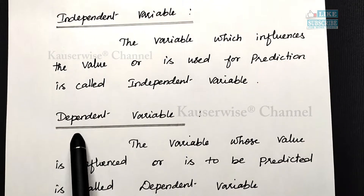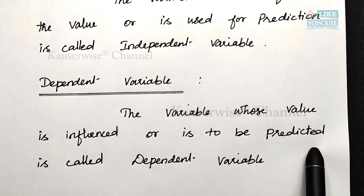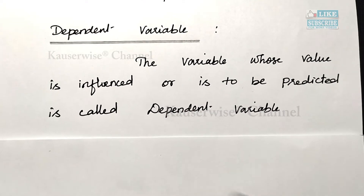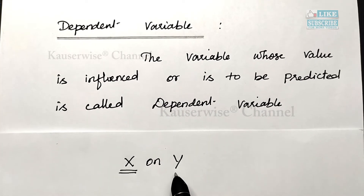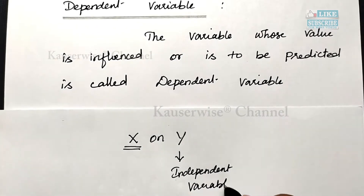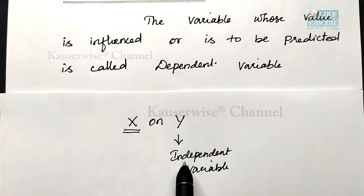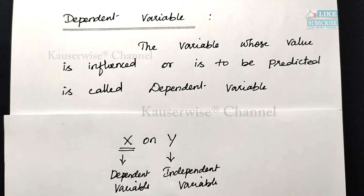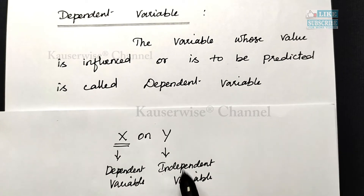The other type is the dependent variable. The dependent variable is the variable whose value is influenced or is to be predicted. For example, if you are going to find out the value of x based on the given value of y — that is, x on y — we are finding out x based on y. The given value y is the independent variable, because it is used for prediction. So x is the dependent variable and y is the independent variable.